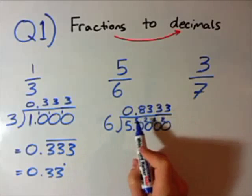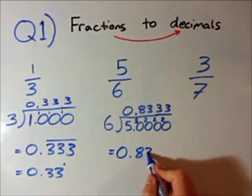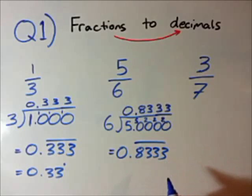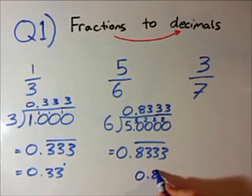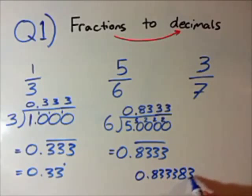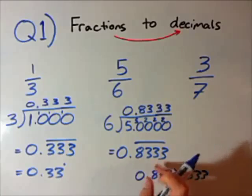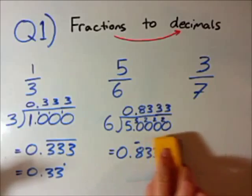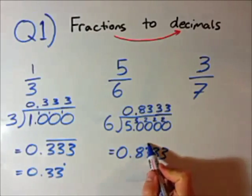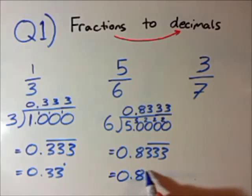This is slightly different because this one is 0.83333. I can't write the recurring line over all of it, because that would mean I'm recurring 0.8333, which I'm not — I'm only recurring the 3s. So just be cautious of that. Instead of writing the line above it all, I just write the line above the part that is recurring. Or you can also write it as 0.8333 with a little dot there for recurring.